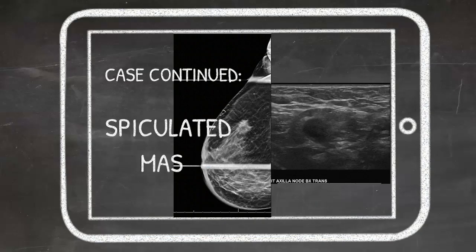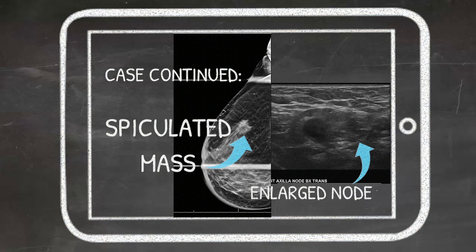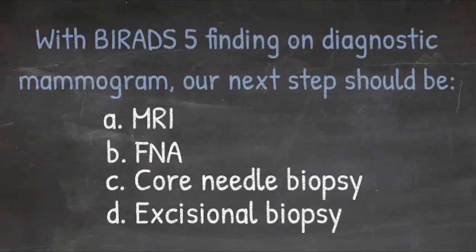The patient mammogram shows a speculated mass with an enlarged axillary lymph node. Now that you have these concerning findings on imaging, what do you do next?